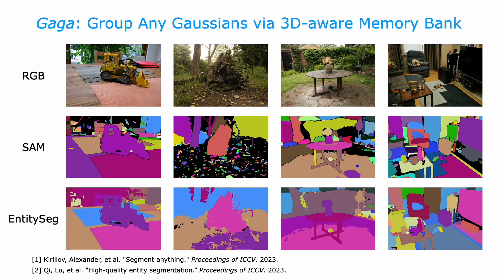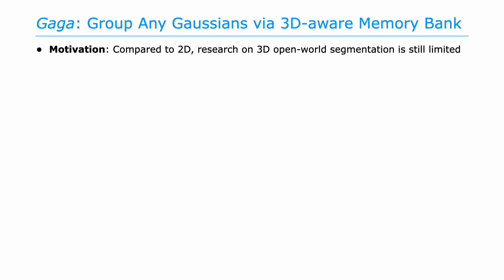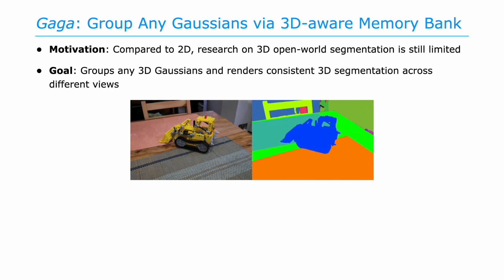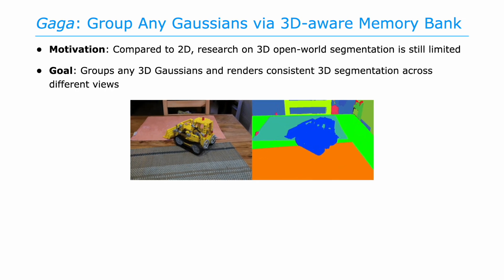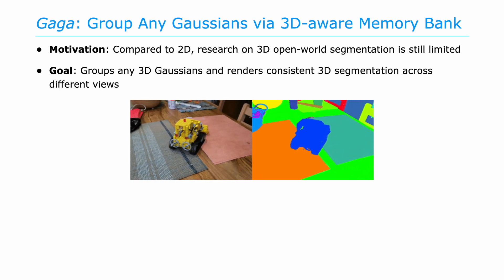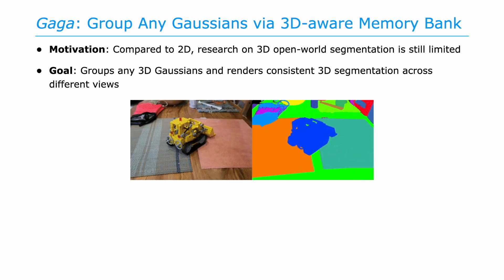GAGA was motivated by the notable advancements in 2D open-world segmentation. However, acquiring annotated data to train their 3D counterparts is challenging, and attempts to extend these 2D segmentation models to 3D are still limited. Hence, our goal is to leverage the ability of 2D open-world segmentation models to group 3D Gaussians and render consistent 3D segmentation across different views.